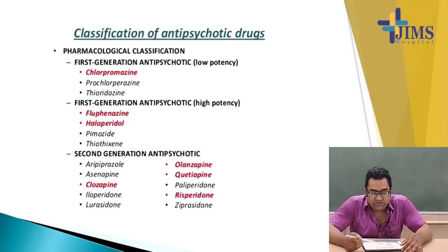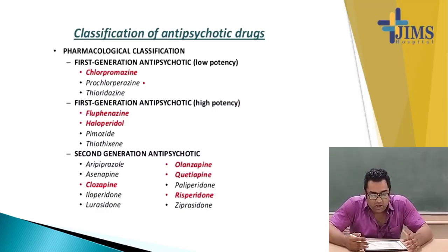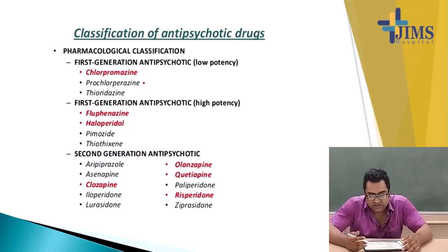First generation antipsychotics include chlorpromazine, prochlorperazine, thioridazine, fluphenazine, haloperidol, pimozide, and thiothixene. Second generation antipsychotics include aripiprazole, olanzapine, quetiapine, risperidone, paliperidone, asenapine, clozapine, iloperidone, lurasidone, and ziprasidone.